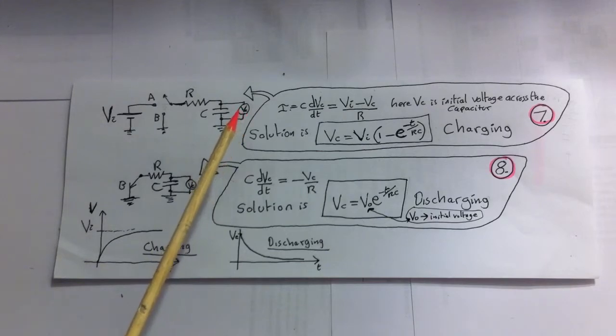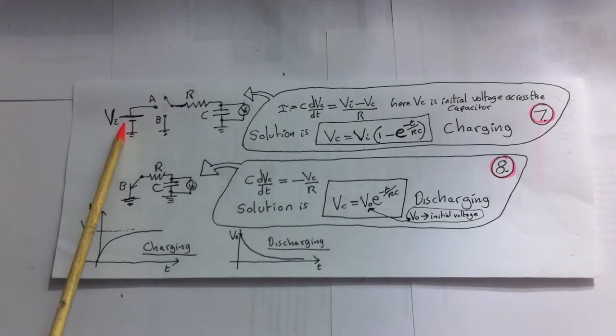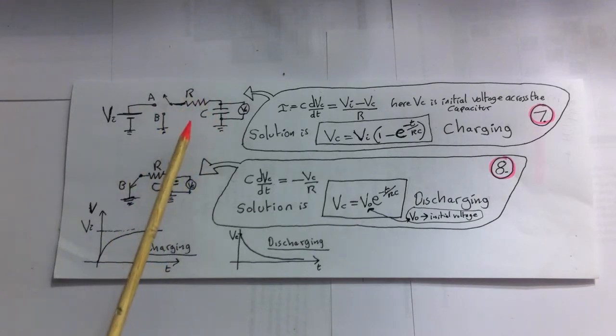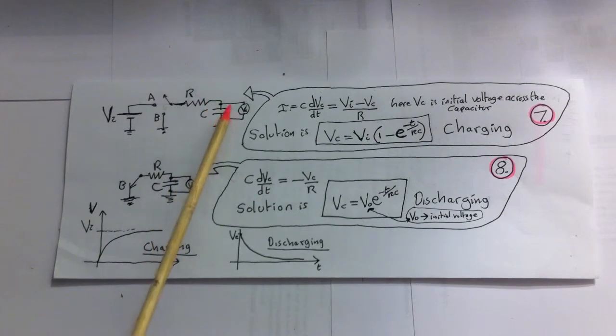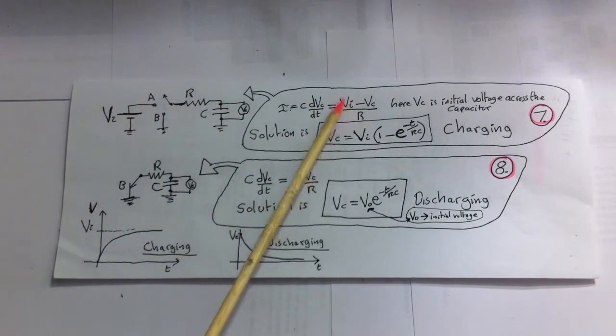where VC is the initial voltage on the capacitor. So here we've got the voltage, the input voltage, minus the capacitance voltage over the resistance. That gives you the current going in. And then of course you've got the current which is defined as C dV by dt. That's down there, so the current coming in this way equals the current going in, therefore we've got this equation.